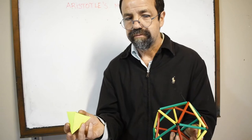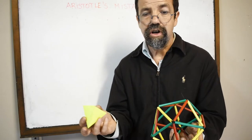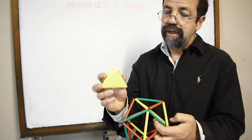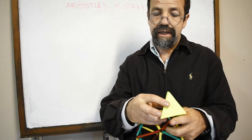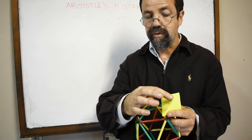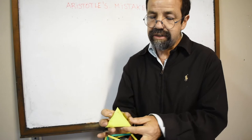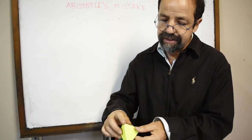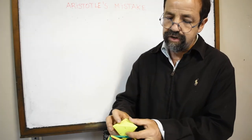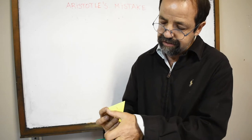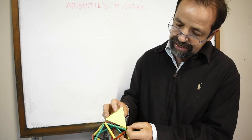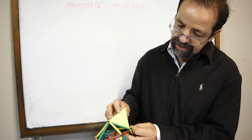But he was wrong. That's not the case. This tetrahedron has an equilateral triangle base, but these three sides are equal to each other, yet they are not the same length as one of the edges.